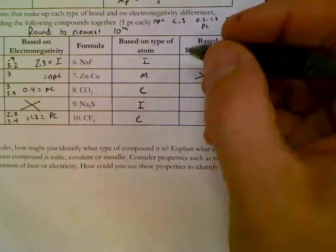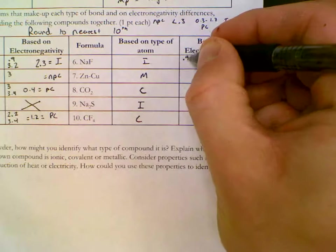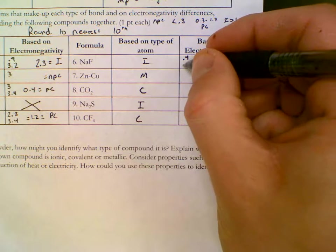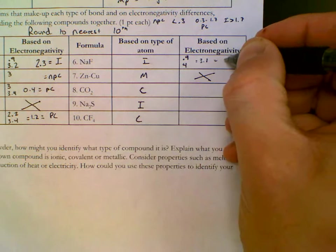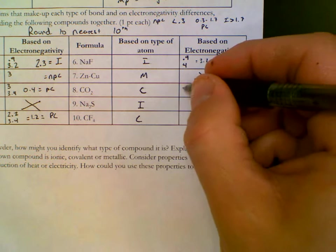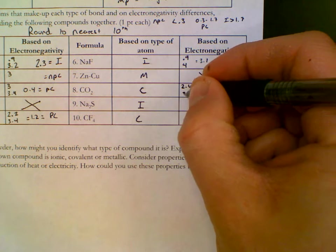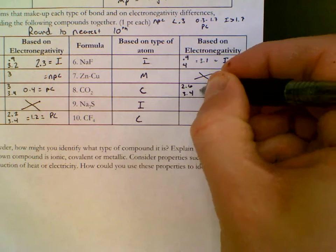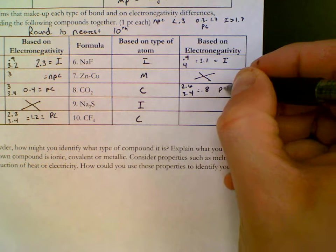On the right-hand side, we've already done sodium once over here, so we have a 0.9. And fluorine, 3.98 rounds to 4, so this is 3.1, very ionic. Carbon to oxygen, carbon's listed as 2.55, so 2.6. Oxygen is 3.4, gives us 0.8, which is polar covalent.